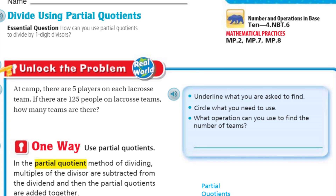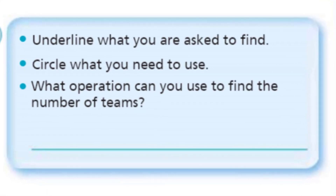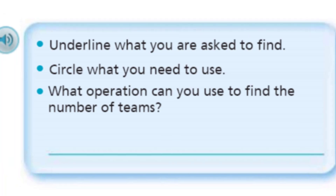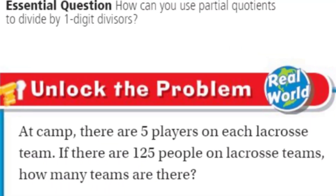Let's go over here to our favorite little blue box. It says underline what you are asked to find. That seems simple enough — underline what you are asked to find. And that would be: how many teams are there? We're underlining that right here. Super easy.